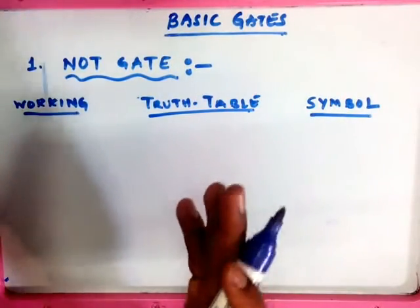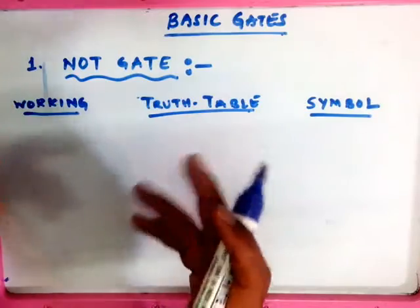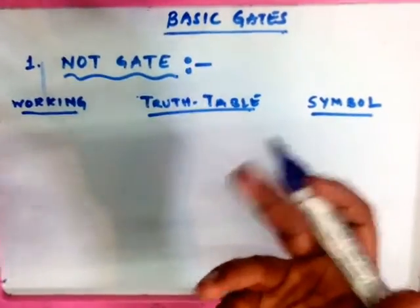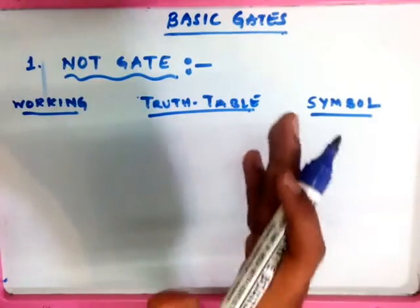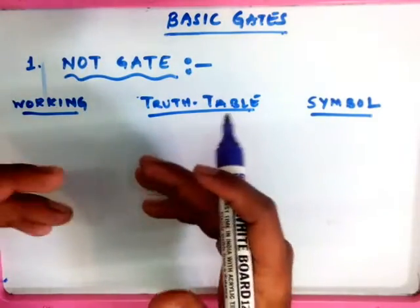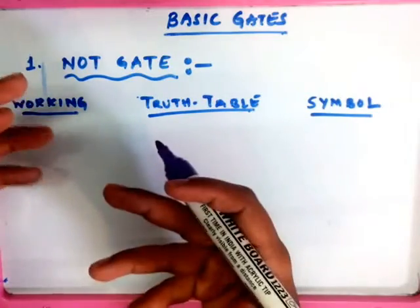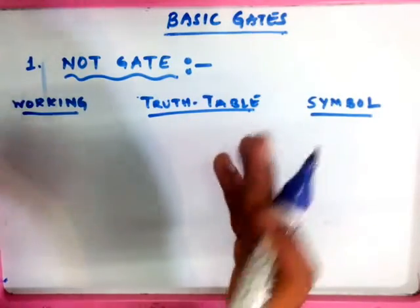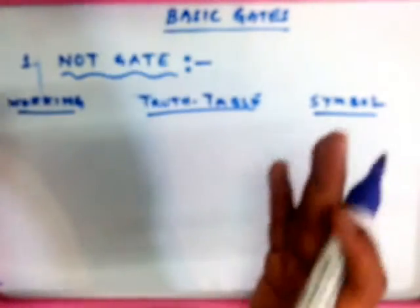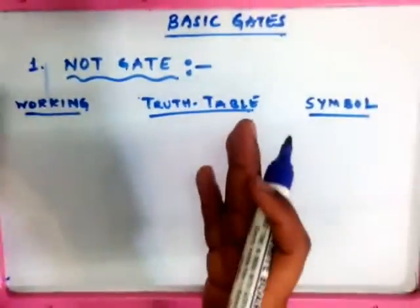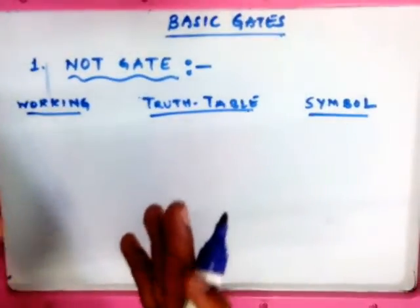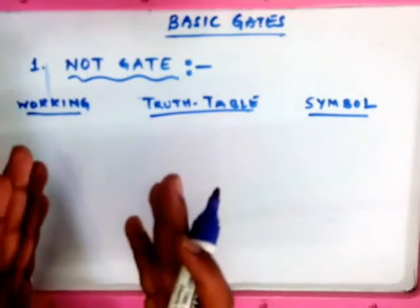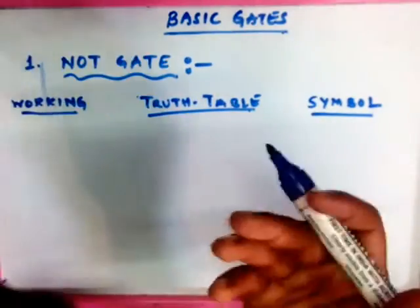We are going to see the second session for logic gates, in which we will take the topic of basic gates. The first one is the NOT gate. The name itself says it — NOT means no. In a general sense, NOT means negative, and in the technical, electronic sense, NOT means whatever you give as input, you take the reverse of it.